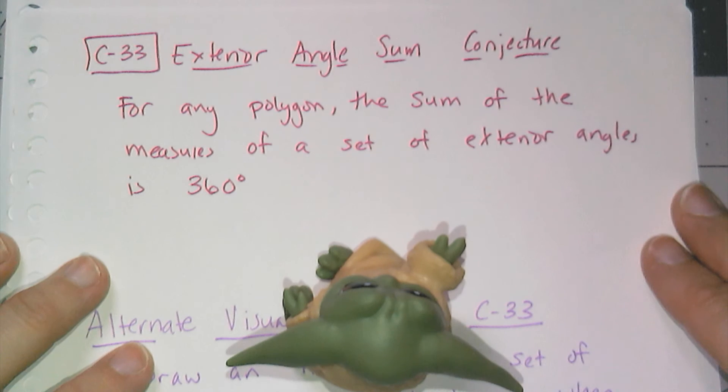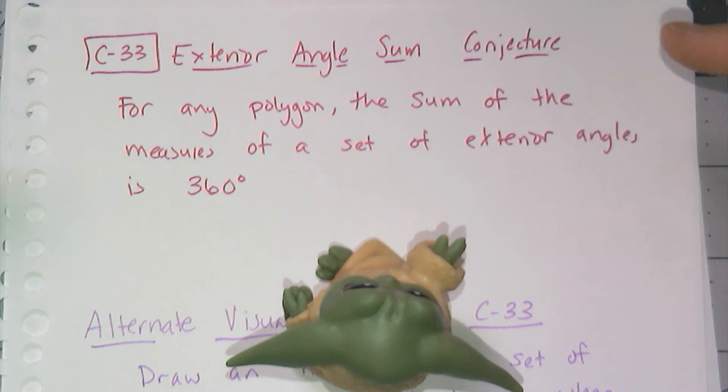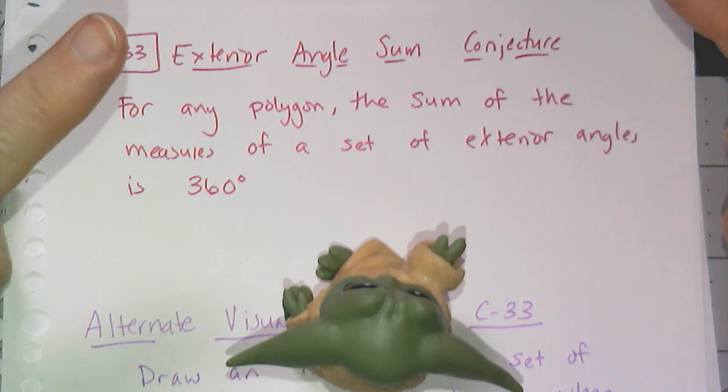So, of course, this gives us conjecture 33, the exterior angles sum conjecture for any polygon. The sum of the measures of one set of exterior angles is always 360 degrees.